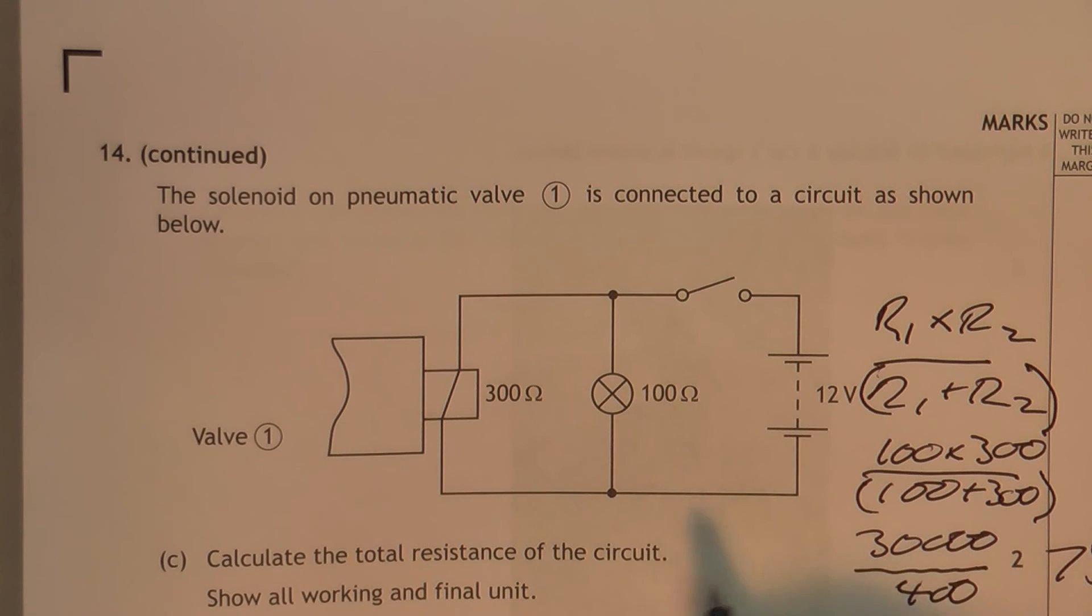Now, watch the answers. The smallest resistor is 100 ohms. With an answer of 75, that's smaller than the smallest resistance. That suggests that the answer might be right.